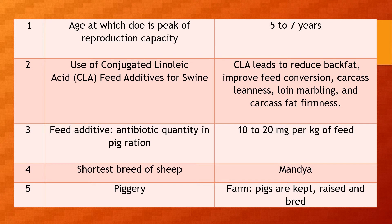Question 1. Age at which the doe is at its peak of reproduction capacity. Answer: at the age of 5 to 7 years, the doe is at its peak reproduction capacity.